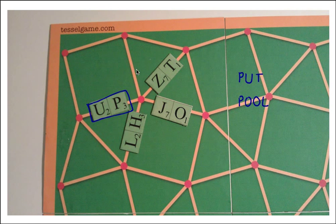Notice that the tile ZT is used by the word PUT but not used by POOL. Similarly, the tile LH is used by the word POOL but not by the word PUT. That's why we call these two words mutually exclusive.